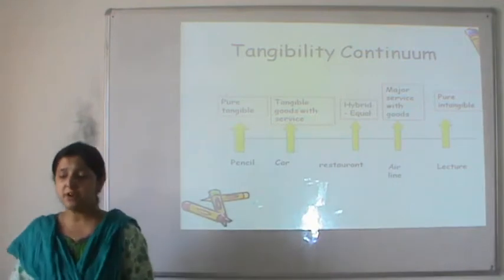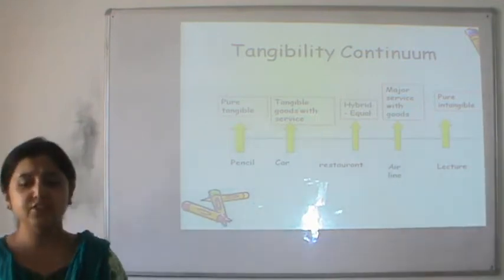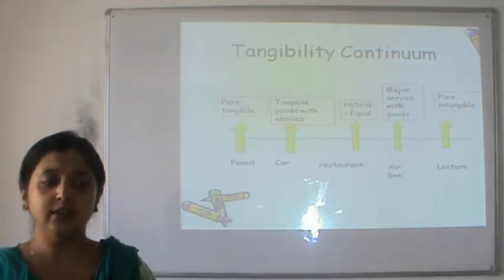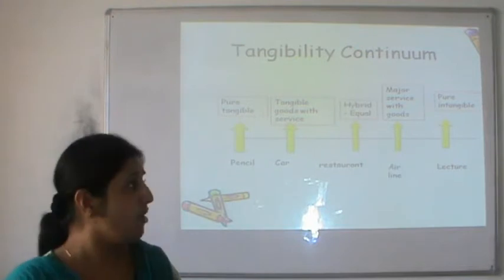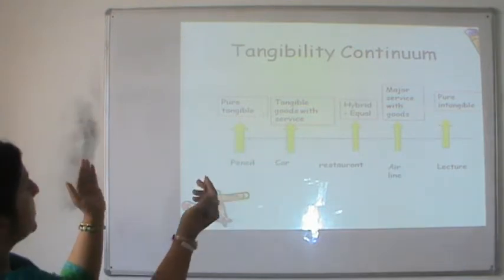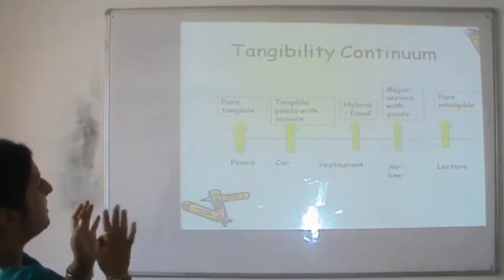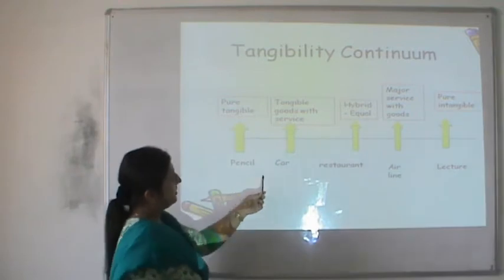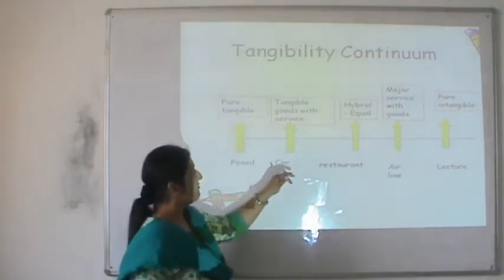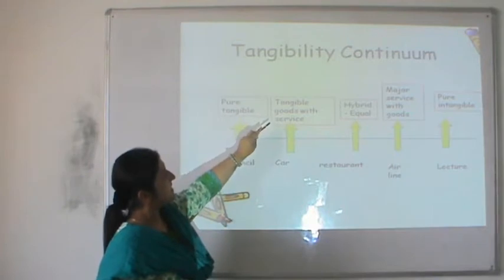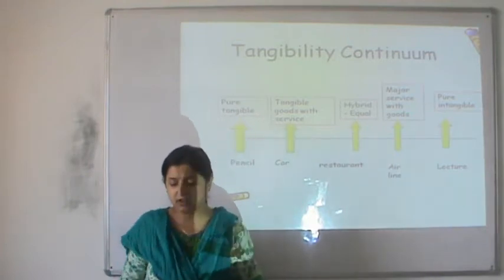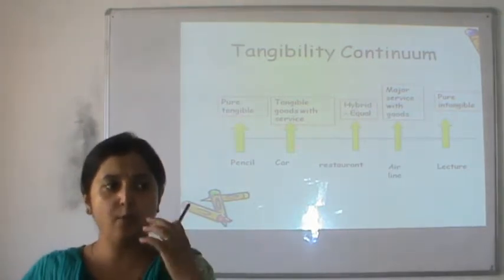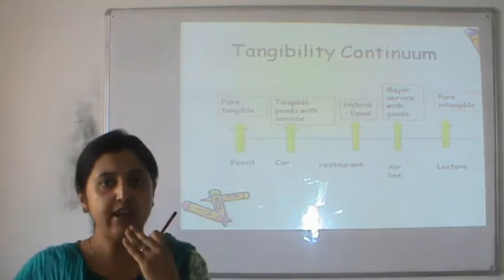On the other end there is a purely intangible product — like a lecture delivered by a faculty to students. There is nothing which can be documented in physical form. But moving from this left side toward the right side, we see three middle situations: a car, a restaurant service, and airline services. A car represents a tangible good with some portion of service — the company may give free services initially and paid services later, giving the consumer assurance that the company will stand beside them if something goes wrong.